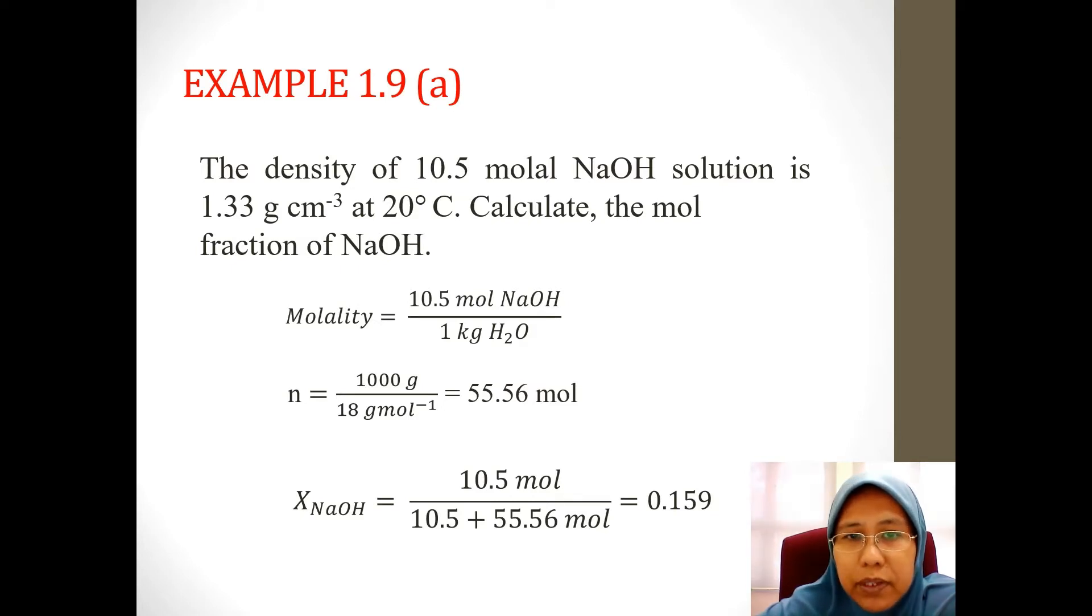Meaning that we can find the number of mole of water. So the number of mole of water is 1,000 grams, gotten from the 1 kilogram water, divided by 18 gram per mole, and you will get 55.56 mole. What is the total number of mole for all component? 10.5 mole of sodium hydroxide plus 55.56, which we have calculated. So the mole fraction now is 0.159. Notice that it does not have any unit.